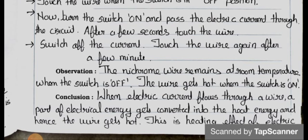Conclusion is that when electric current flows through a wire, a part of electrical energy gets converted into heat energy, and hence the wire gets hot. This is heating effect of electric current.